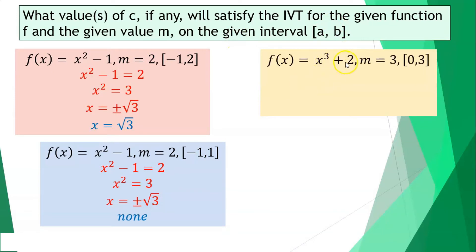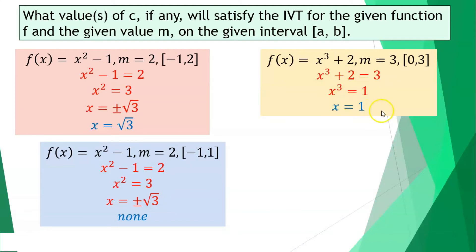Next, x cubed plus 2 is the function, the value for m is 3, and the interval is from 0 until 3. Setting x cubed plus 2 equal to 3, transfer 2 to the other side, that becomes 1. Getting the cube root of 1, our result is 1. So 1 is also within 0 until 3, and 1 is a solution to this function.